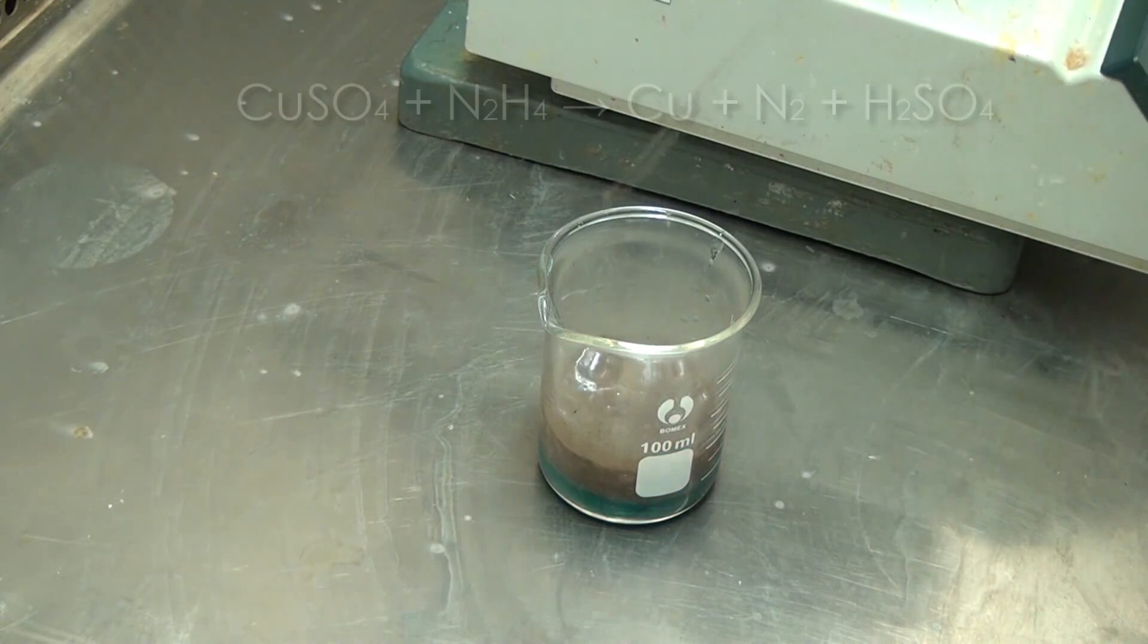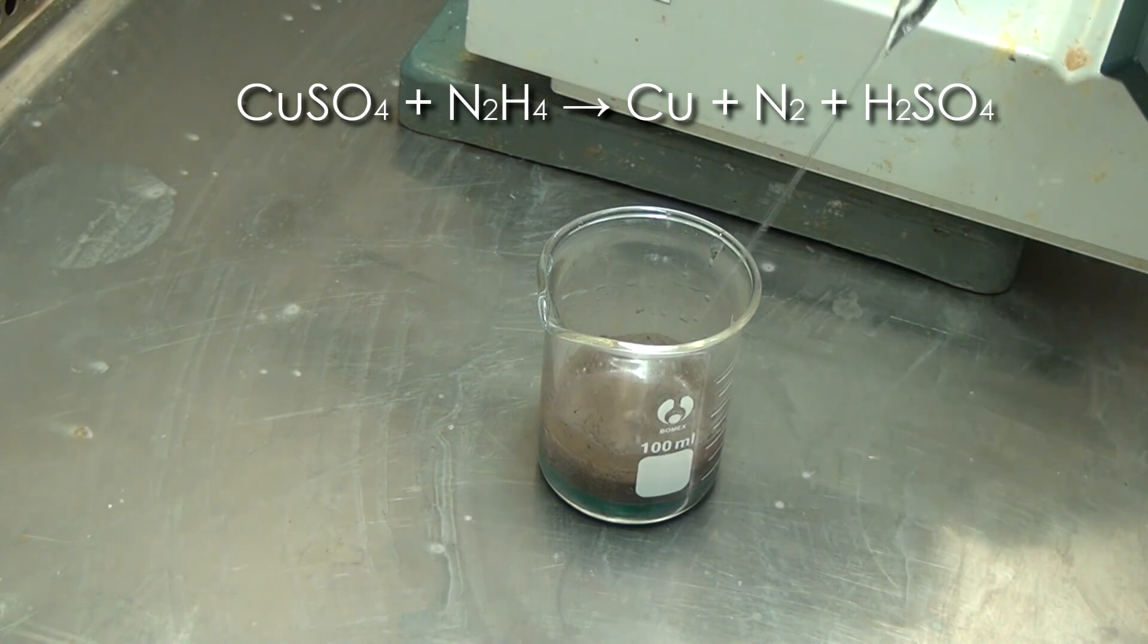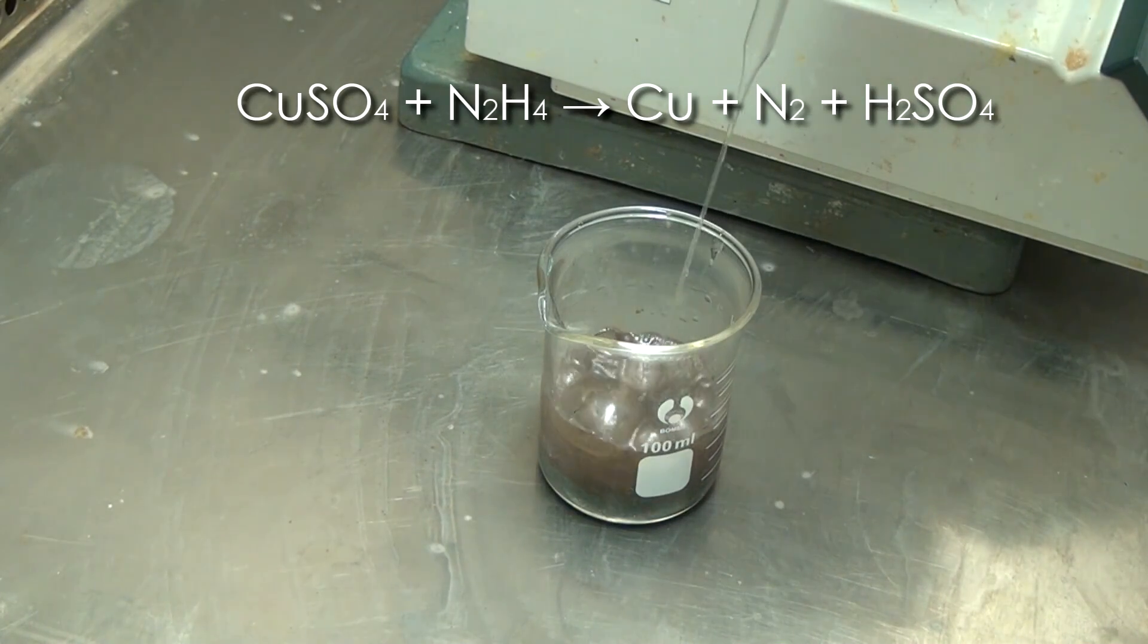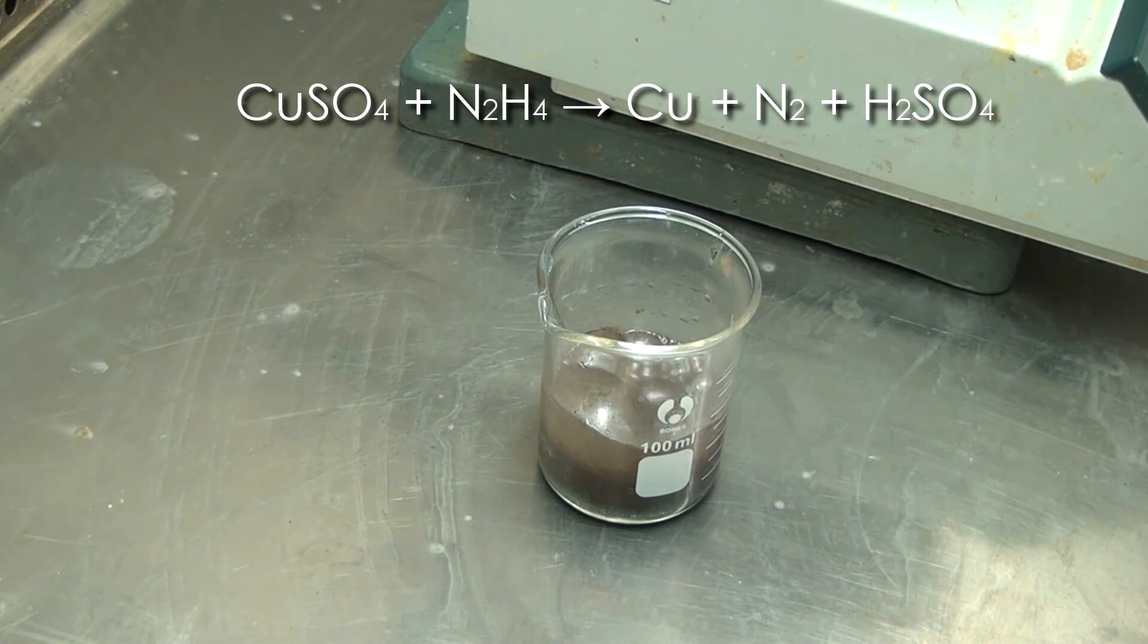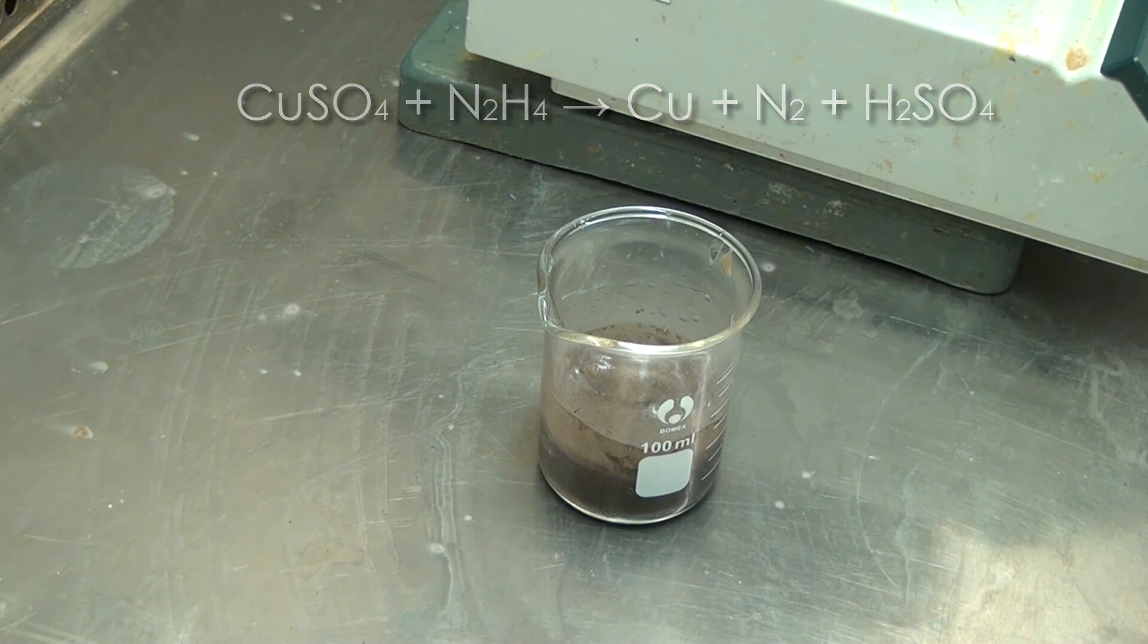Immediately we can observe a reaction in which nitrogen gas is released. Small particles of copper begin to form in our beaker. Hydrazine is a very good reducing agent and recovers copper from divalent to the metallic state.